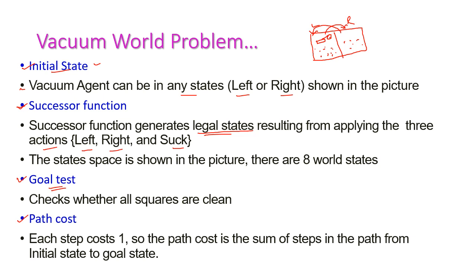The goal test checks whether all squares are clean or not. Our goal is to clean all the squares — we have only two squares, and both should be clean. The next component is path cost. Each step cost is one, so initially we take one as our step cost for all actions. The path cost is the sum of steps in the path from the initial state to the goal state.